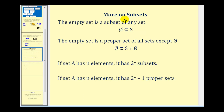A few more minor things to mention about subsets. The empty set is a subset of any set, and the empty set is a proper subset of all sets except for itself, the empty set. It follows that if set A has n elements, it has 2^n subsets. And if set A has n elements, it has 2^n − 1 proper subsets, because we can't count A as its own proper subset.